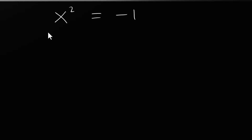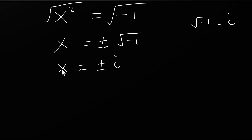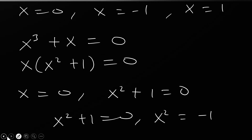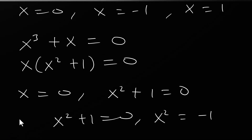From x squared plus 1 equals zero, we get x squared equals negative one. We can take the square root of both sides — this will be complex. Remember that the square root of negative one is i, so x equals plus or minus i. So the solutions are x equals zero, x equals minus one, x equals one, and x equals plus or minus i. Thanks for watching.